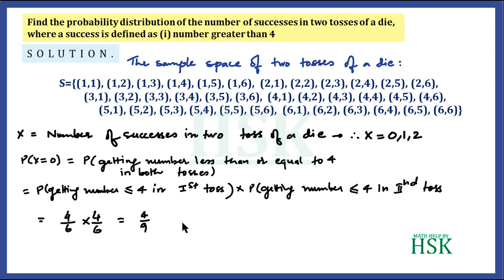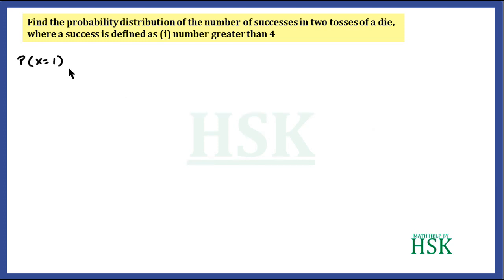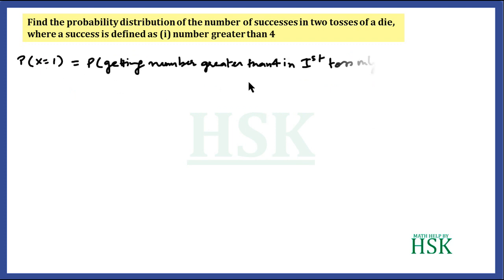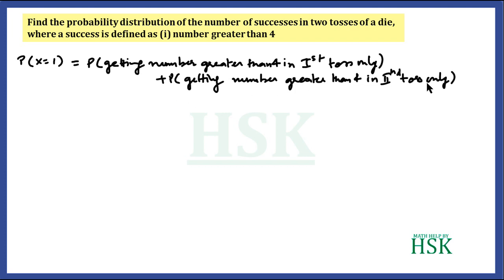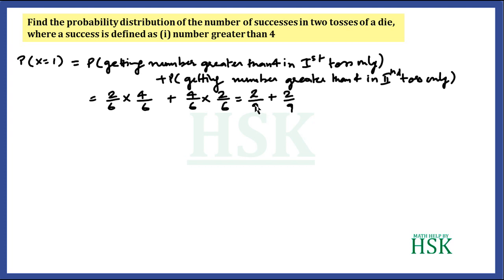P(X=1), the probability of exactly one success, means getting a number greater than 4 in the first toss and less than or equal to 4 in the second, plus getting a number greater than 4 in the second toss and less than or equal to 4 in the first. This equals (2/6 × 4/6) + (4/6 × 2/6), where 2/6 is the probability of getting a number greater than 4. This simplifies to 4/9.